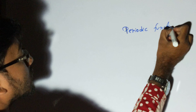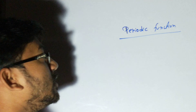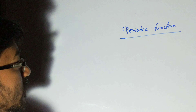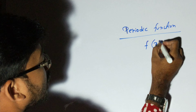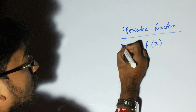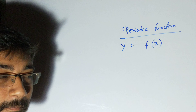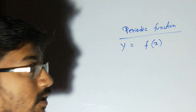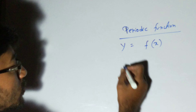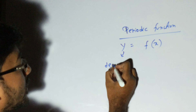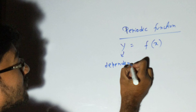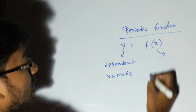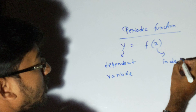A function is represented as f(x), where y equals f(x). This means y is a function of x, so y depends on x. Here, y is the dependent variable and x is the independent variable.